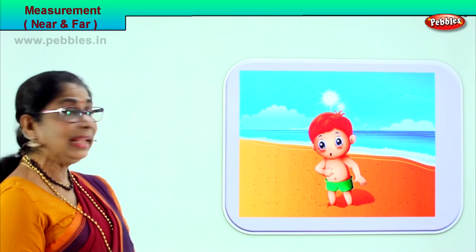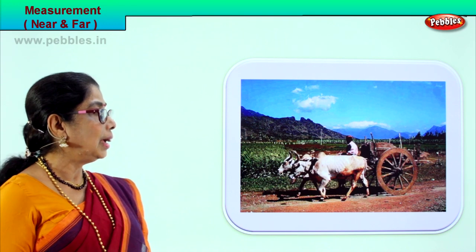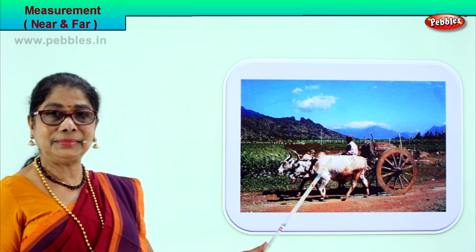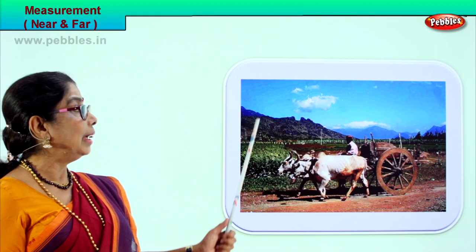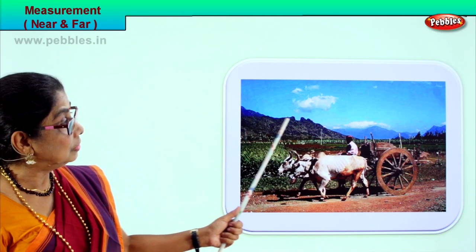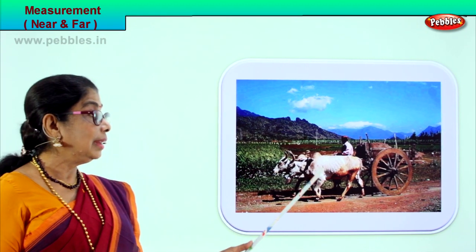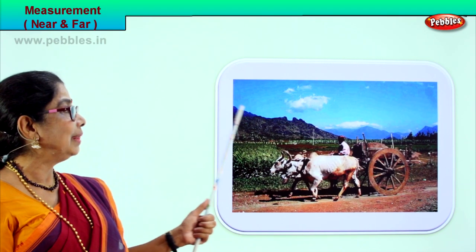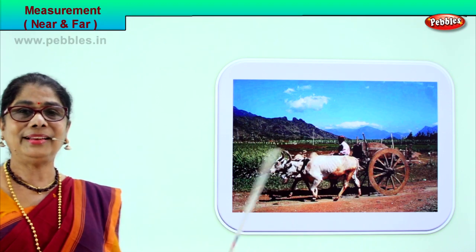Look at this lovely picture of a bullock cart passing by. The bullock cart is close to you - near. But can you see far away there is a beautiful field and chains of mountains far away? There are clouds up in the sky far away. The bullock cart is near, the chains of mountains are far away. Near and far - our two measurements.